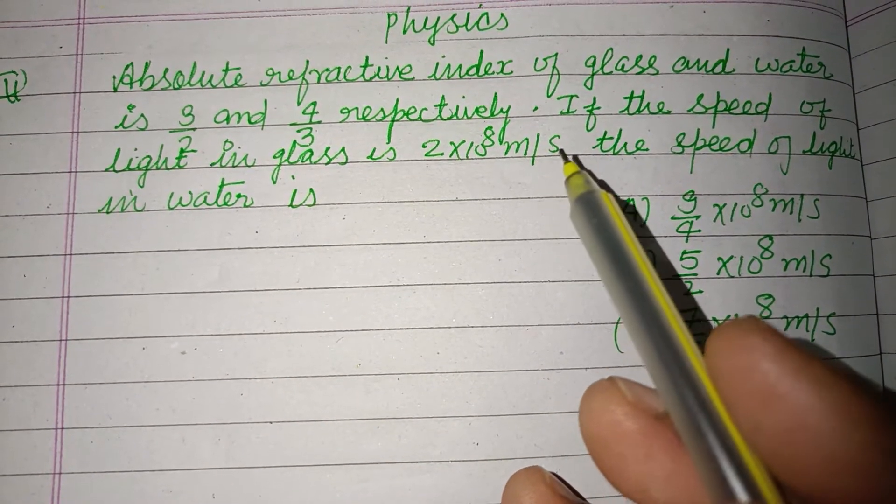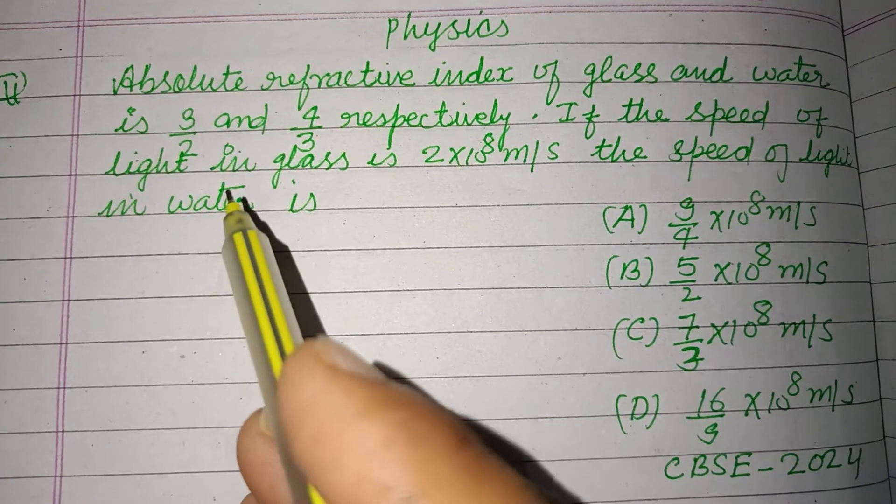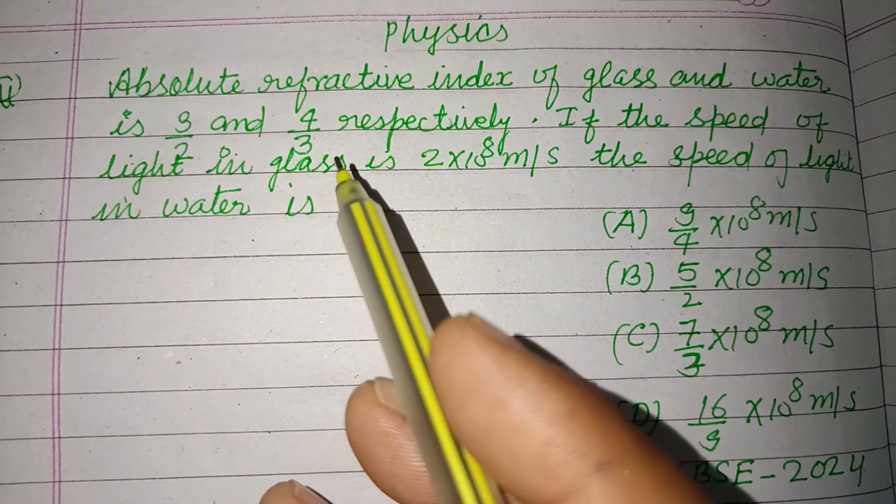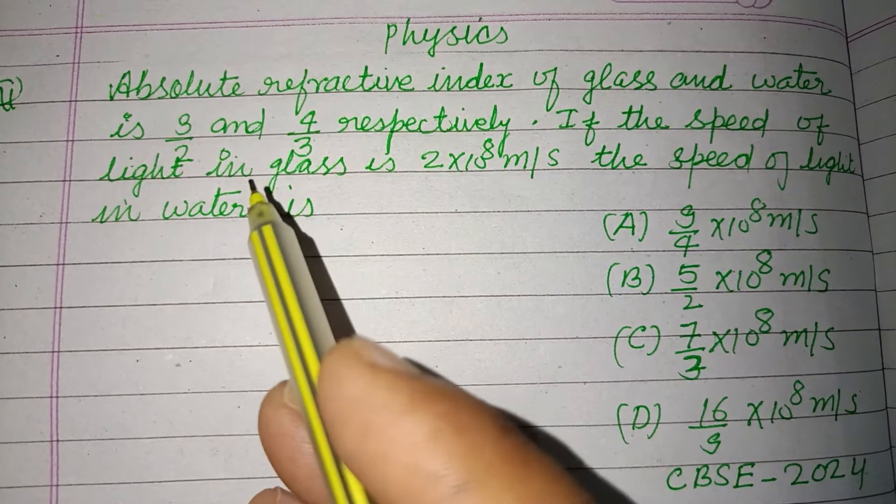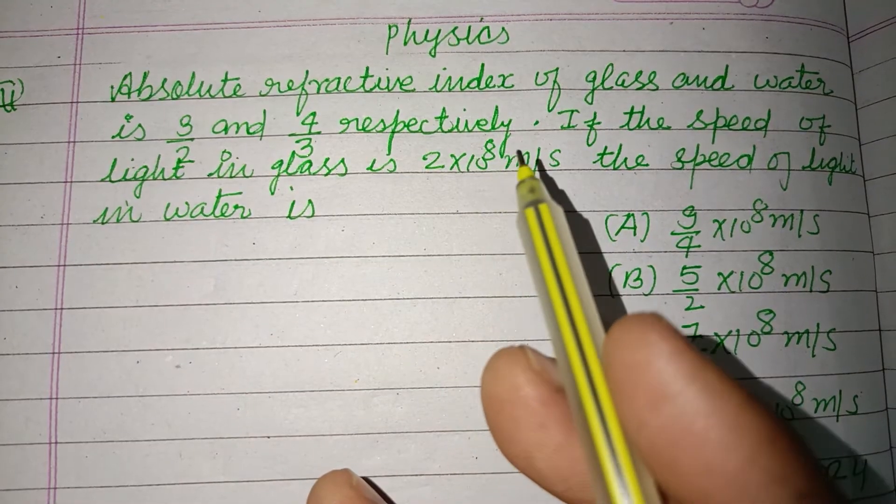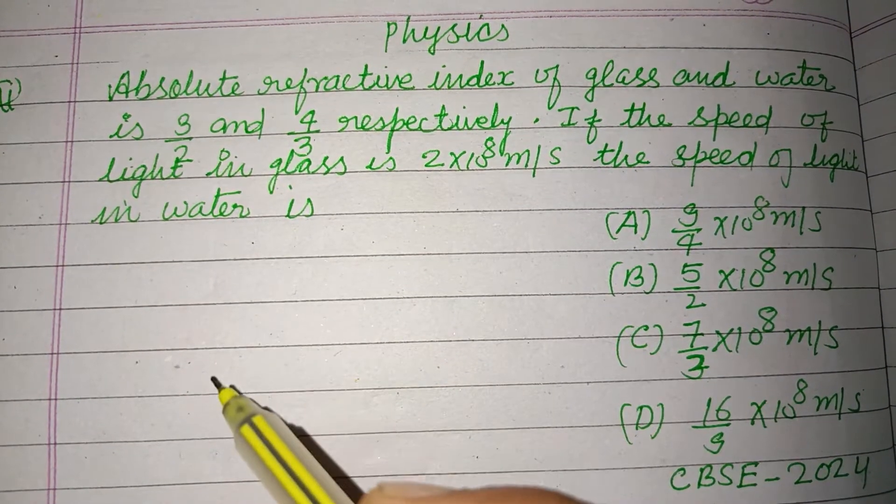Absolute refractive index of glass and water is 3 by 2 and 4 by 3 respectively. The speed of light in glass is 2 into 10 to the power 8 meter per second, and the speed of light in water is?